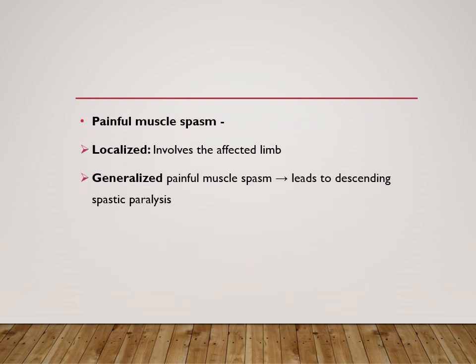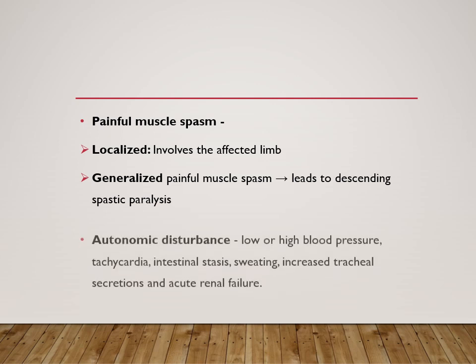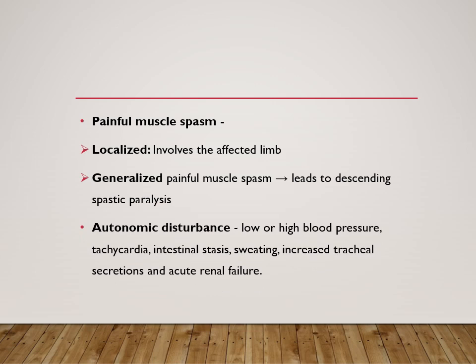There will be painful muscle spasms — localised or generalised. In the localised form it involves the affected limb. If generalised, it leads to descending spastic paralysis in a descending pattern. Autonomic disturbances can also be there, including high blood pressure and tachycardia.